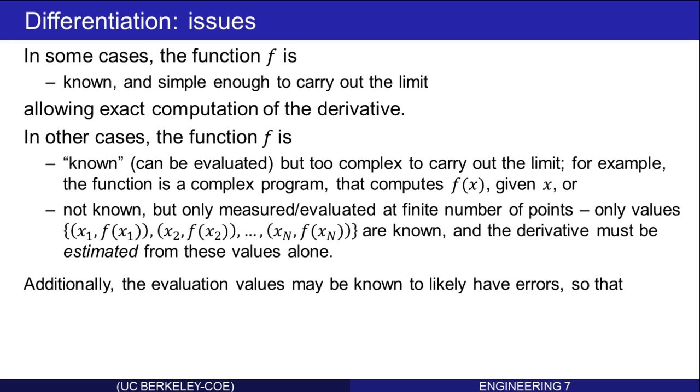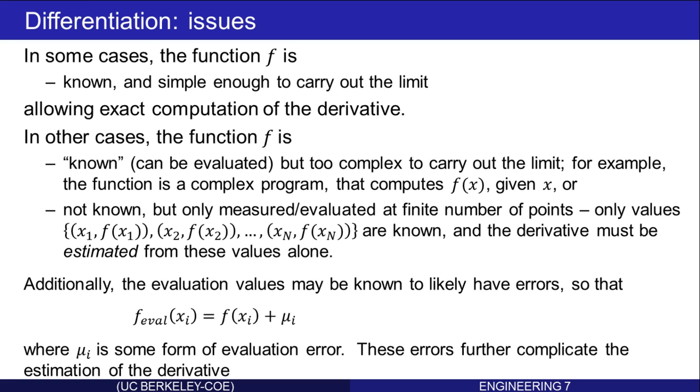Another problem is that the evaluation values may be known to likely have errors, so that the evaluated value at xi is actually the true value plus mui, where mui is some form of evaluation error. These types of errors will further complicate the estimation of the derivative.